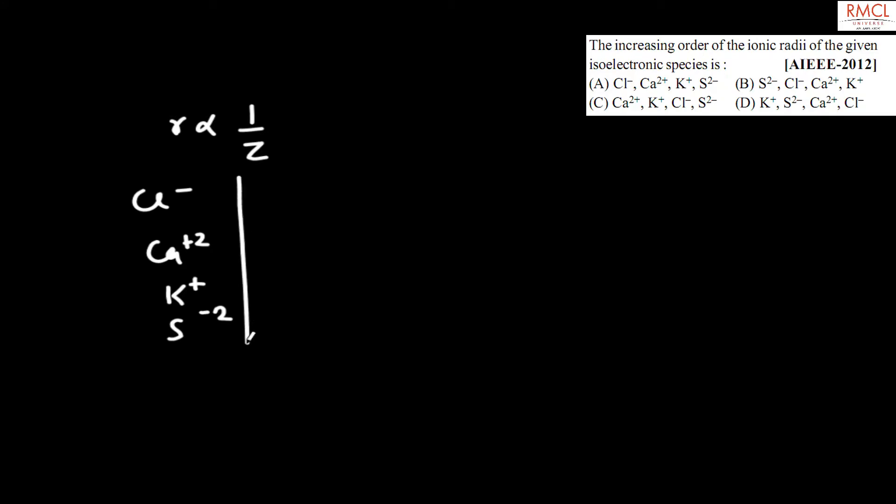So z for Cl is 17, it's 20 for calcium, for potassium 19, and for sulfur is 16.